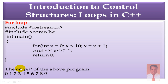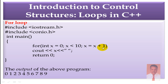If you run the program, the output will be 0, 1, 2, 3, 4, 5, 6, 7, 8, and 9. Initially x = 0, 0 < 10 so it prints 0 and increments to 1. Then 1 < 10, so the loop continues. 2 < 10, 3 < 10, 4 < 10 — and so on until 9 < 10, it prints 9, then x becomes 10. Now 10 < 10 is false, so the loop ends.